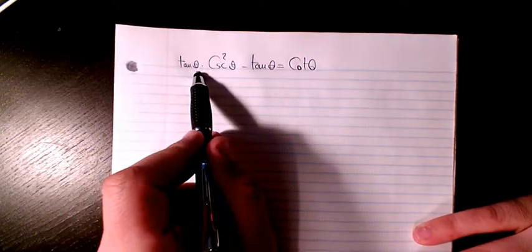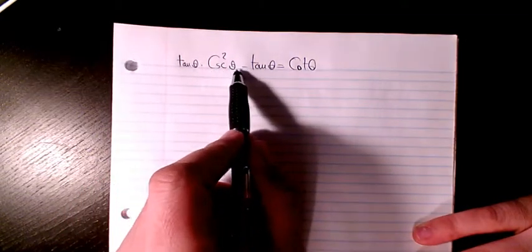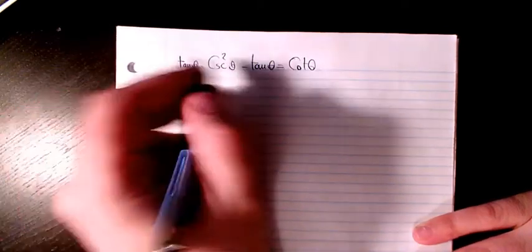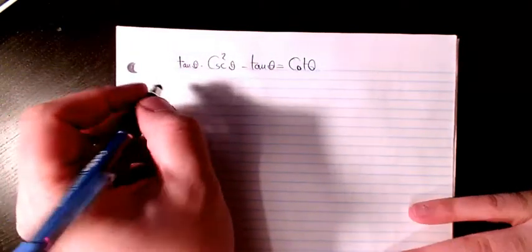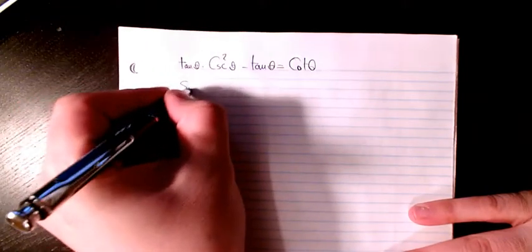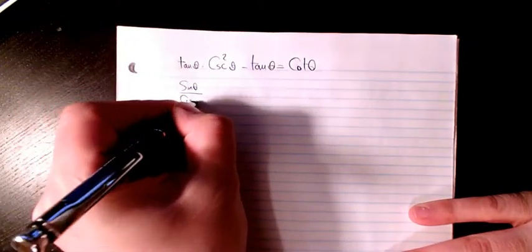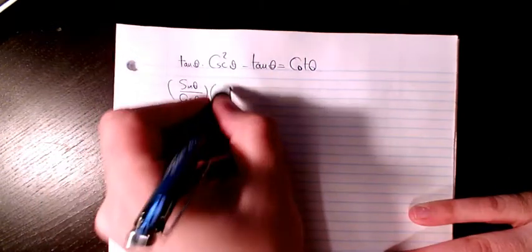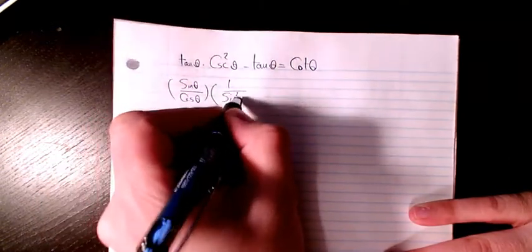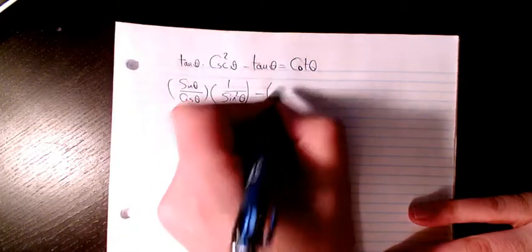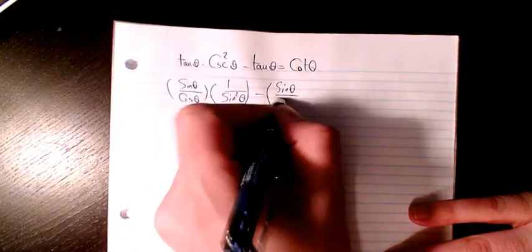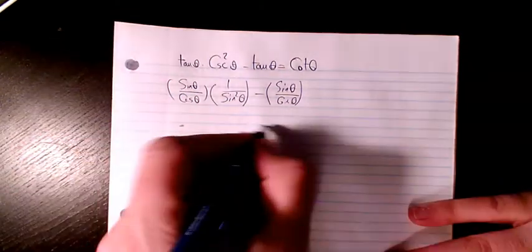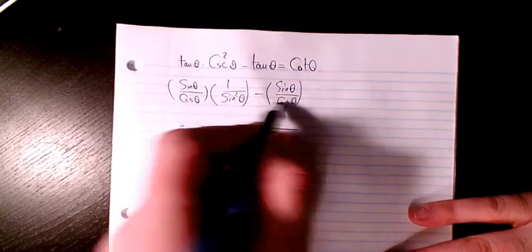So we have tan theta times cosecant squared theta minus tan theta equals cotangent theta. I start from the left-hand side. I have sine theta divided by cosine theta for tangent. Cosecant is the inverse of sine, so one over sine squared theta, minus sine theta over cosine theta.